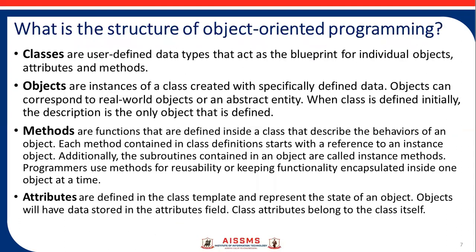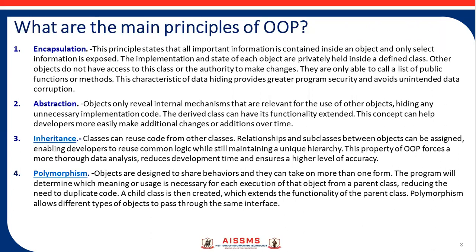The structure of object-oriented programming language includes classes, objects, methods, and attributes. The main principles of OOP are: first, encapsulation, which means binding and wrapping of data. Then, abstraction means hiding unnecessary implementation details. Inheritance means one class can inherit the property of another class — one is the parent class and the other is the child class. The child class can acquire the properties of the parent class.